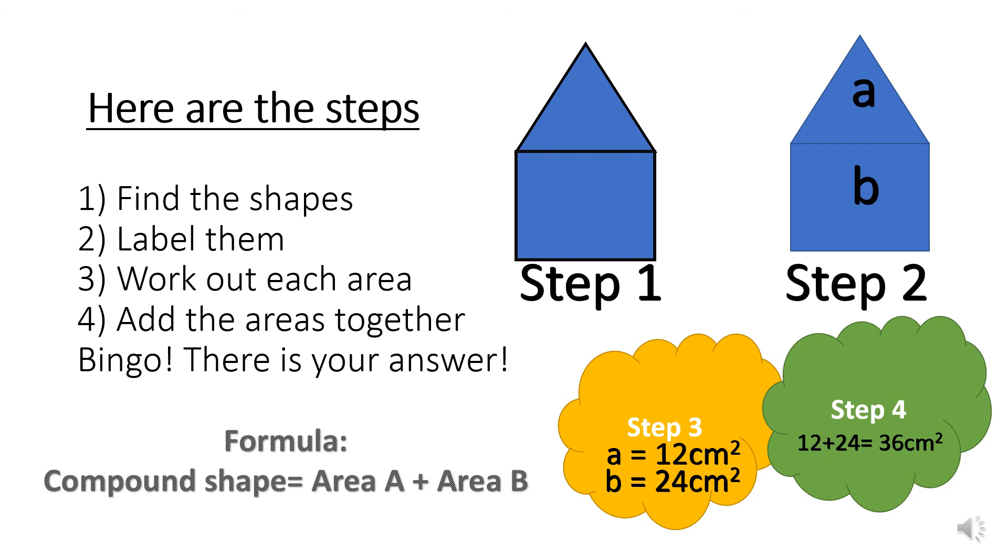That is where you add the areas together. Step four. 12 plus 24 is 36. So it's 36 cm squared. Don't forget to leave the square there. If you don't, then your answer is wrong. And bingo, that is your answer. Here's the formula. Compound shape is area A plus area B. And that is it. Make sure you're writing these notes down because they will help you.